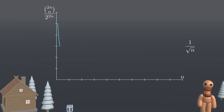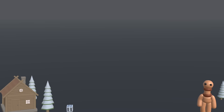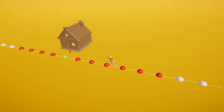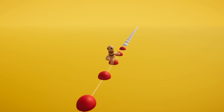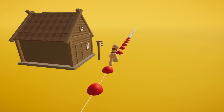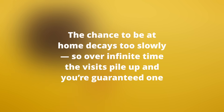The larger n, the smaller the probability of returning in n steps. But the decay is pretty slow and the series diverges to infinity, meaning the expected number of visits home is infinite. If there were a positive chance that the pawn never returns, then the expected total number of returns would be finite. But we just found it's infinite, so the only possibility is that the pawn returns with probability 1. Roughly, the chance to be at home decays too slowly, so over infinite time the visits pile up — and you are guaranteed one.